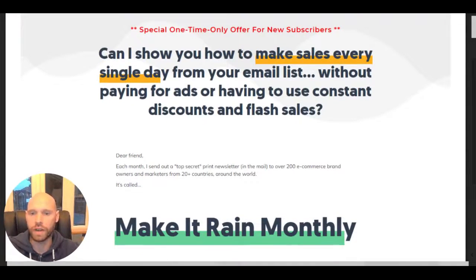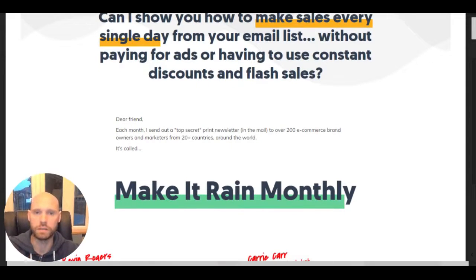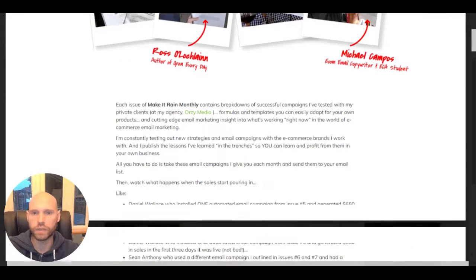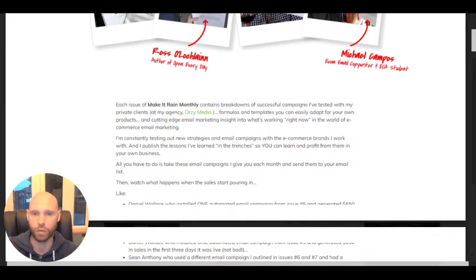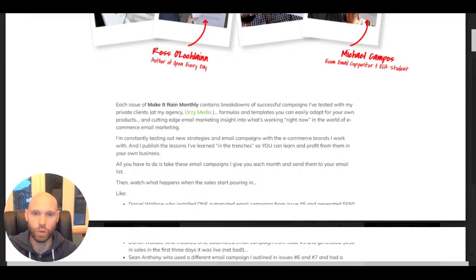Let's read a little bit of the lead as well. 'Dear friend, each month I send out a top secret print newsletter in the mail to over 200 econ brand owners and marketers from 20-plus countries around the world.' Think about this — 'a top secret print newsletter.' The greedy person often wants something that other people can't have — they want to acquire something quite exclusive, something unattainable for other people. It gets the greed glands pumping, as Gary Halbert would say. Even the name of the product, Make It Rain Monthly, totally appeals to greed. 'Contains breakdowns of successful campaigns I've tested with my private clients at my agency, Ozzy Media.' Private clients — you're getting access to something that nobody else has. You want something all to yourself.